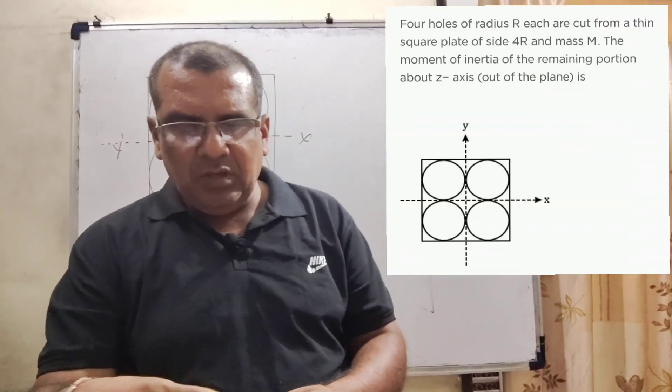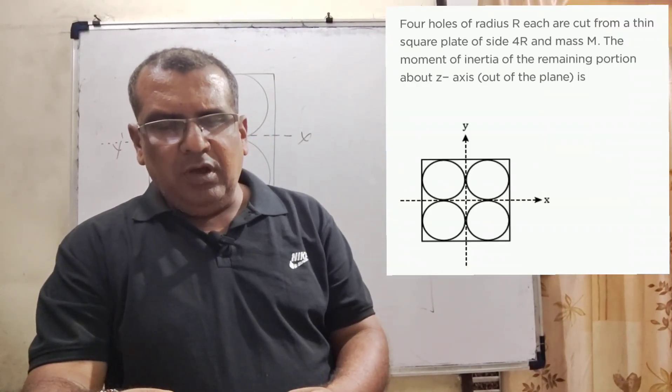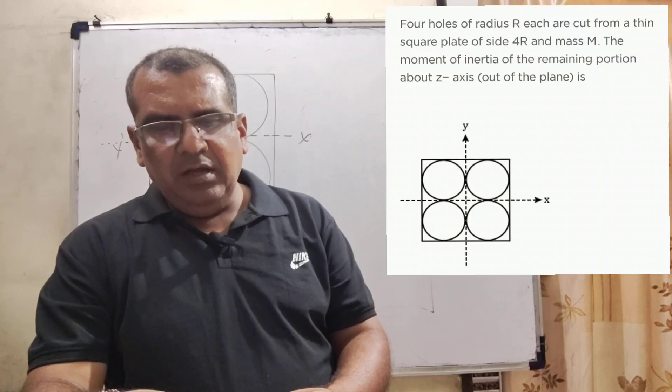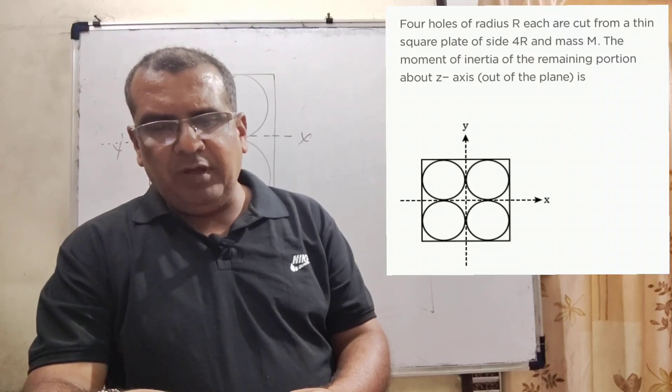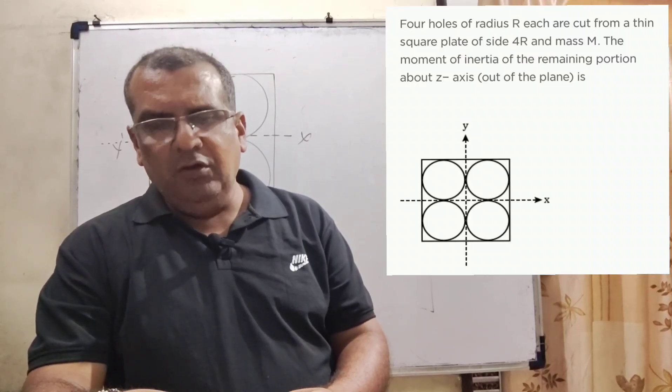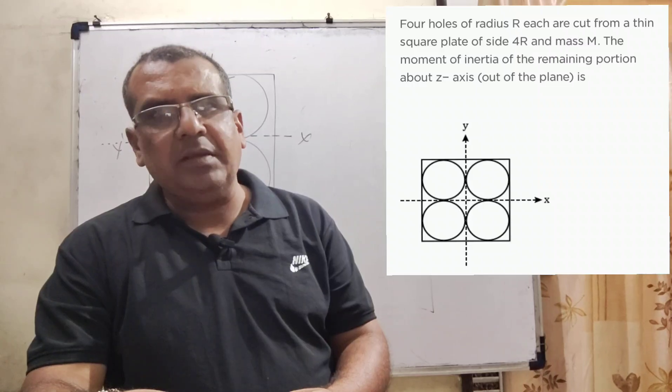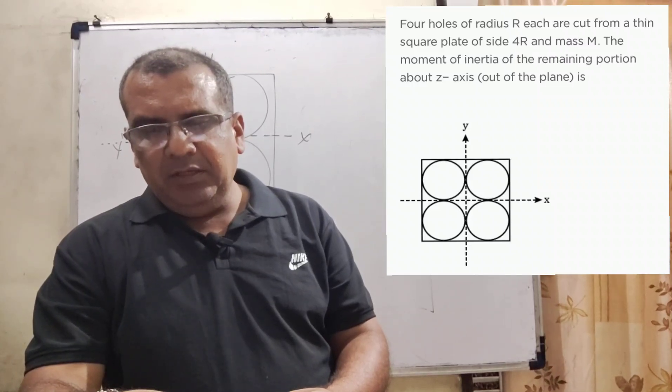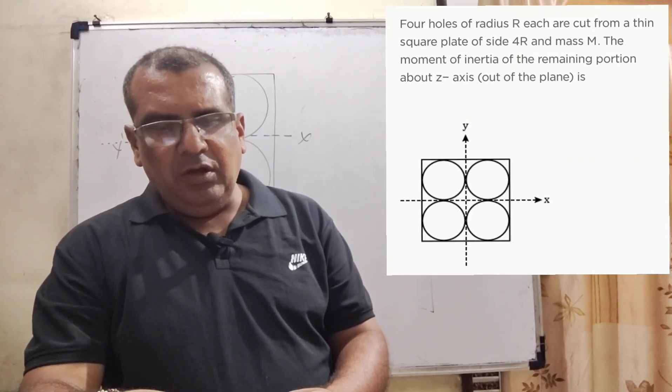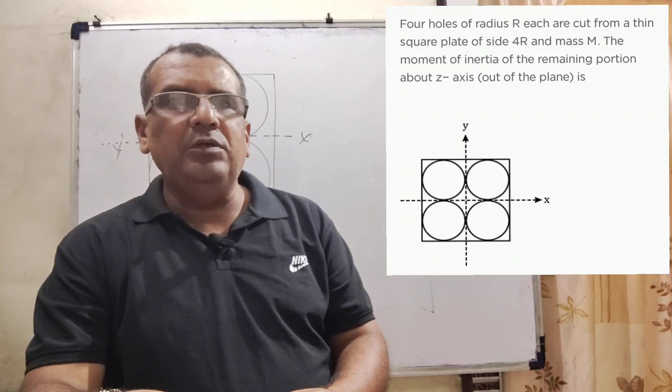Now here is the question. Four holes of radius capital R are cut from a thin square plate of side 4R and mass capital M. Determine the moment of inertia of the remaining portion about the Z axis.